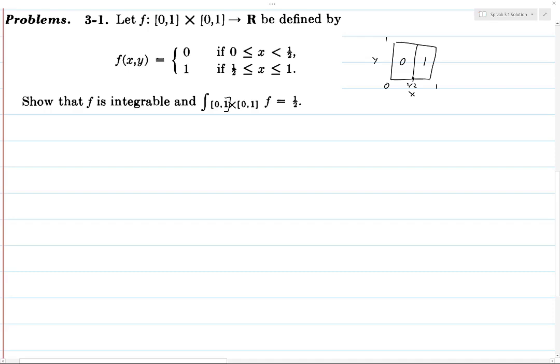But this is sort of the easiest case because we can look at a particular partition. The partition that we're going to look at is precisely this one that I've drawn out here.